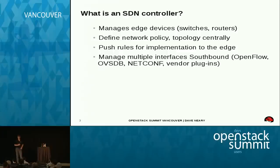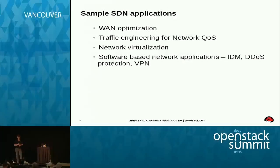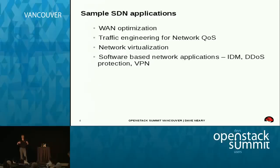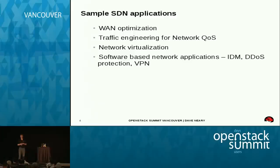OpenDaylight manages multiple pieces on the southbound and can handle multiple protocols — L2, L3, and so on. Why would you use one? Network virtualization is probably of most interest to OpenStack users. It also gives you the ability to interact with how your network interfaces with the WAN — optimizing WAN traffic for quality of service, traffic engineering, identifying hotspots and routing around them, getting quality of service information in real time.